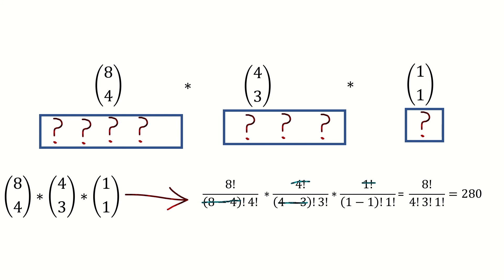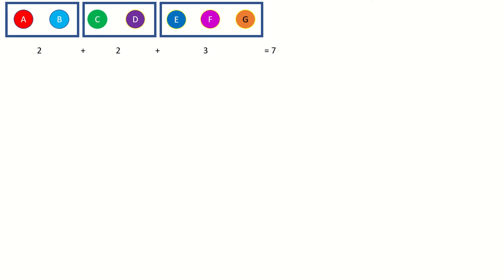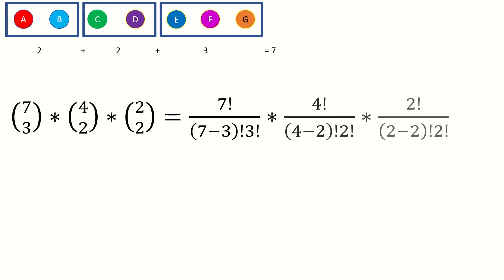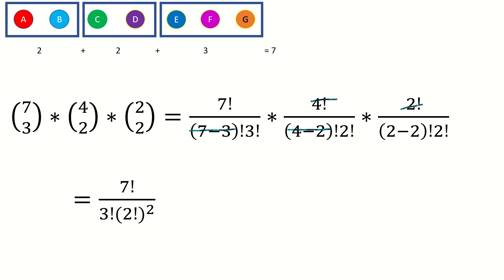What if we have repeating numbers, like in a partition of 7 according to 2+2+3? In this partition, 2 occurs twice. We could still begin the same way: 7 choose 3 times 4 choose 2 times 2 choose 2. Our denominator has a 2 factorial squared because there are two subsets of size 2. Generally, the power of each factorial of a number j is mj — the number of times a subset of size j occurs in that specific partition of n. In this case j is 2 and mj is 2, since in the partition 2+2+3, the value 2 occurs twice.